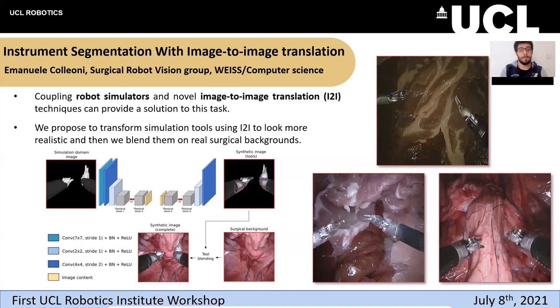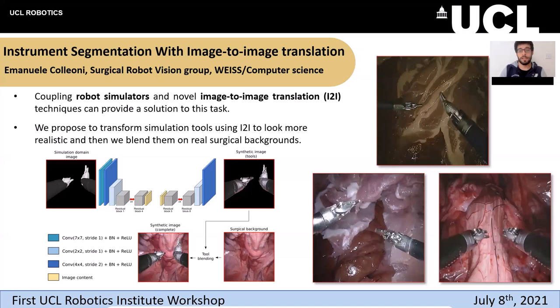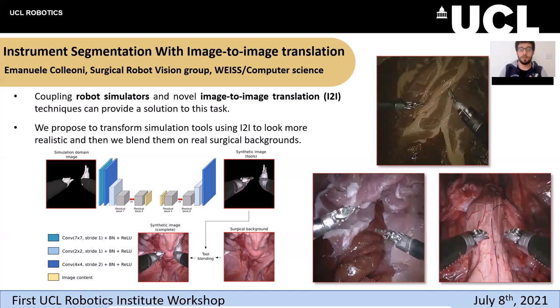As you can see in the bottom left part of this image, we start from simulation tools, then we apply an image-to-image translation network to give them a realistic appearance, and finally we blend these tools on a surgical background in order to produce our full synthetic frames.